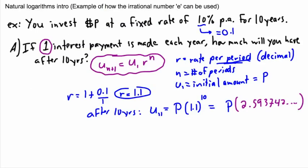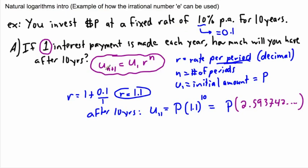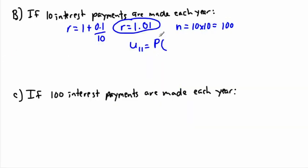Now N is the number of periods: 10 payments per year times 10 years gives N = 100. So U11, the amount after 10 years, equals P times 1.01 to the power of 100. Let me calculate that: 1.01 to the power of 100 gives 2.7048. So the result is P times 2.7048.